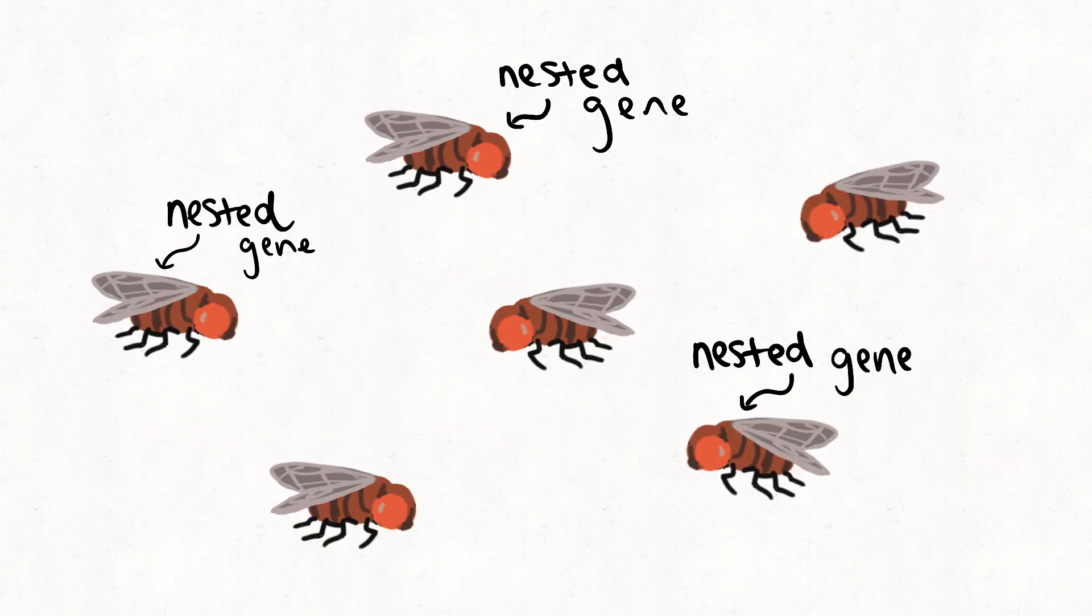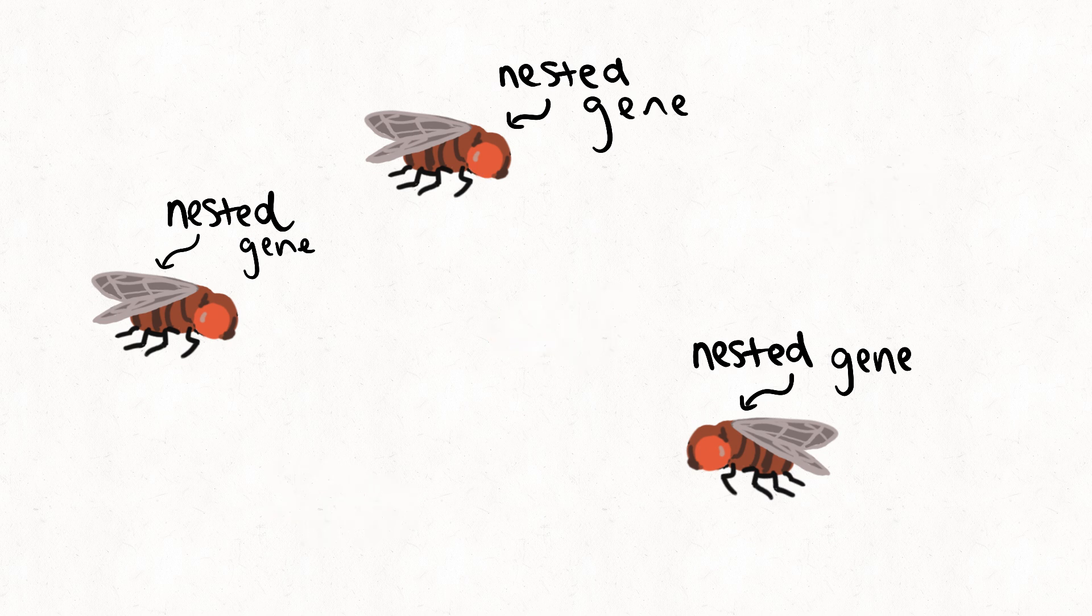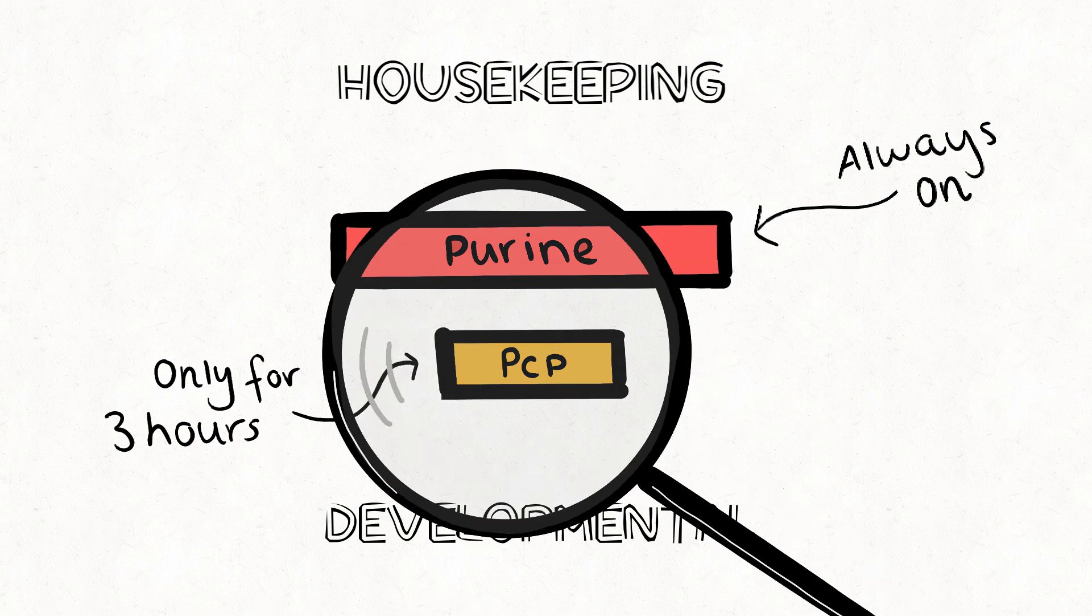However, why this gave a selective advantage in the Drosophila evolution, and how exactly these two genes are regulated so differently, is still unclear.